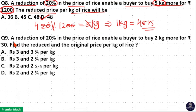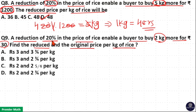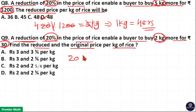Next: a reduction of 20% in the price of rice enables a buyer to buy 2 kg more for Rs. 30. Find the reduced and the original price per kg of rice. Here, this 20% discount results in this extra 2 kg, and this 2 kg also comes from Rs. 30. Which means 20% of Rs. 30 results in this extra 2 kg.